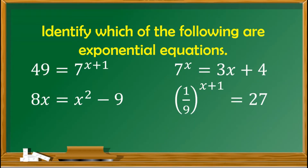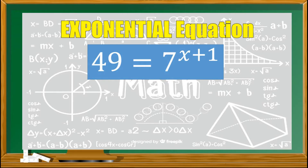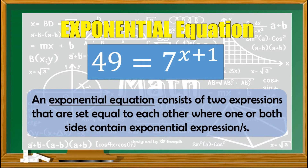First, kindly identify which of the following are exponential equations. The exponential equations are 49 equals 7 raised to x plus 1, and 1 over 9 raised to x plus 1 equals 27. Based on this, what is an exponential equation? An exponential equation consists of two expressions that are set equal to each other where one or both sides contain exponential expressions.